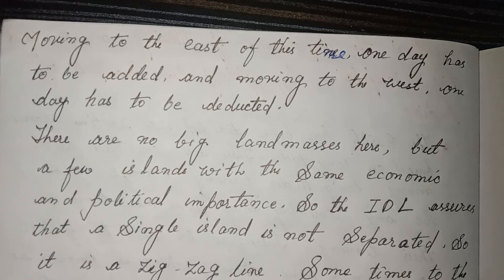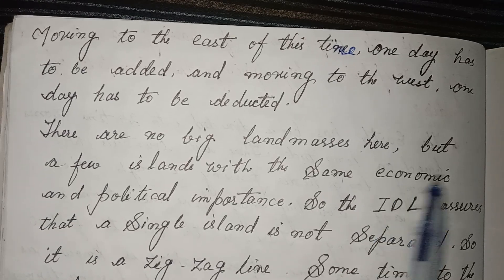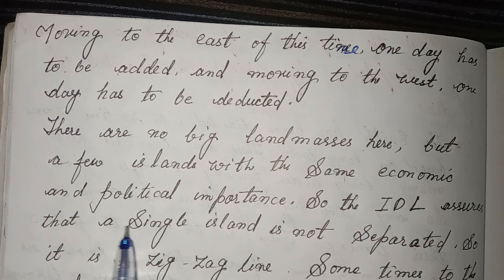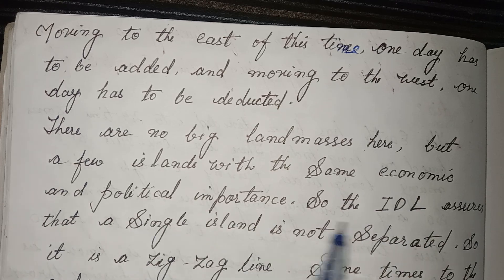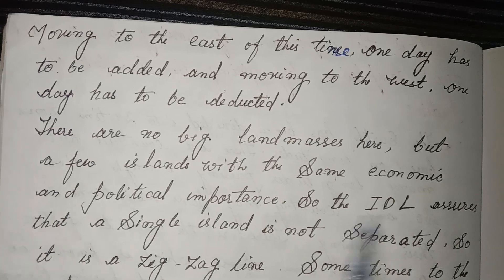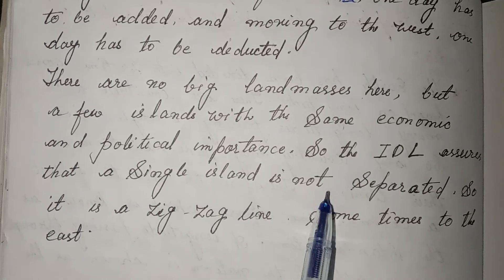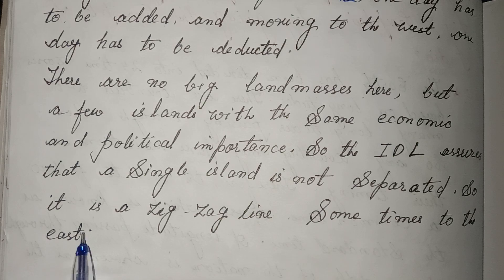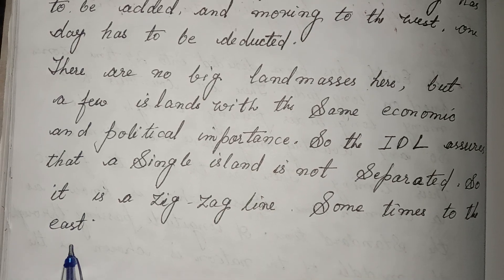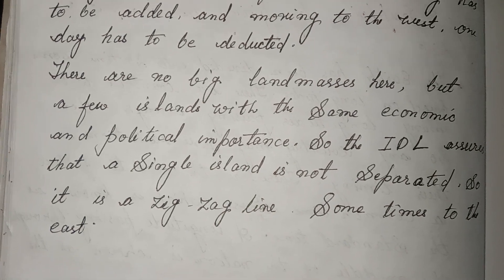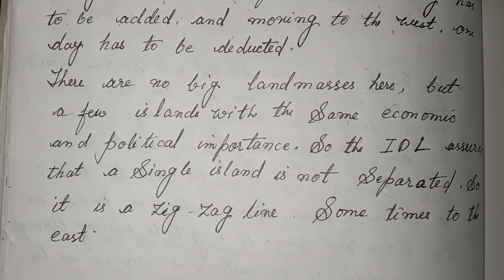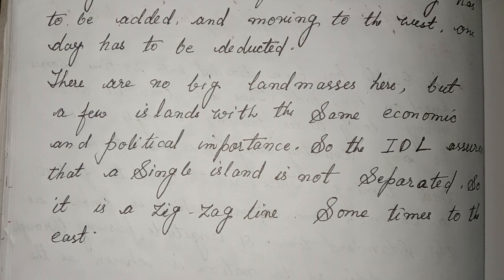Moving to the east of this line, one day has to be added, and moving to the west, one day has to be deducted. There are no big land masses here but a few islands with the same economic and political importance, so the International Date Line ensures that a single island is not separated. Therefore it is a zigzag line. I have now completed all questions in this lesson. If you like my videos, please like, share, and subscribe.